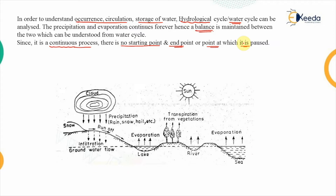The water cycle can be started at any point. Let's say clouds are moving on the earth's surface due to certain wind effects. When a cloud reaches a certain place where water can be lost in the form of precipitation, that precipitation happens either as rain, snow, hail, or different forms.